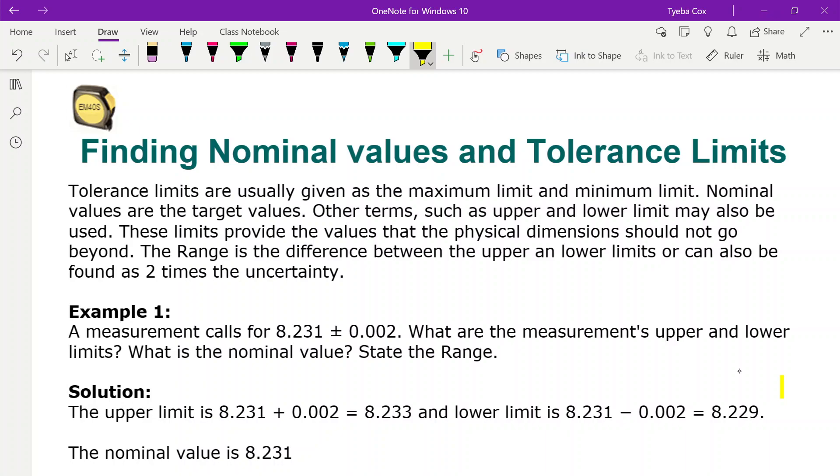Finding Nominal Values and Tolerance Limits. Tolerance limits are usually given as the maximum limit and the minimum limit. Nominal values are the target values. Other terms, such as upper and lower limit, may also be used. These limits provide the values that the physical dimensions should not go beyond. The range is the difference between the upper and lower limits or can also be found as two times the uncertainty.